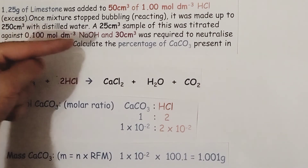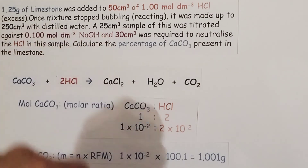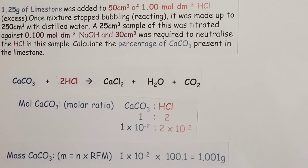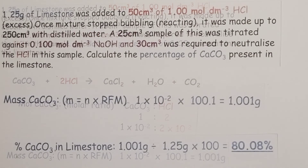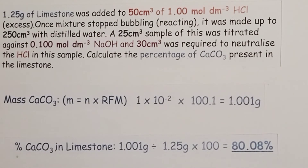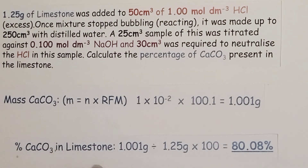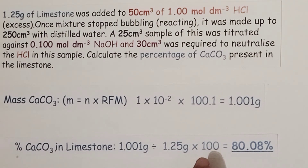We can now calculate the percentage of calcium carbonate with one more step. To work out the percentage of calcium carbonate in the limestone, we take the mass of calcium carbonate divided by the total mass of limestone — 1.25 grams — then multiply by 100 to convert to a percentage, giving us 80.08 percent.